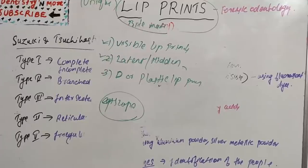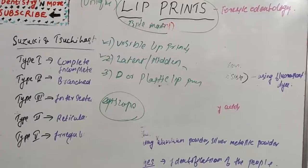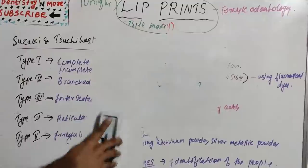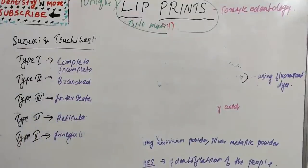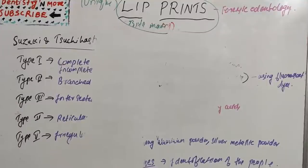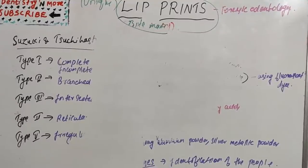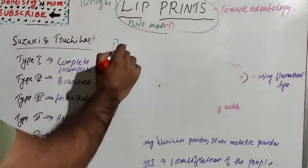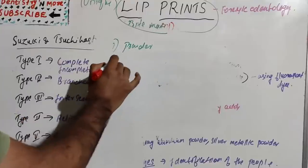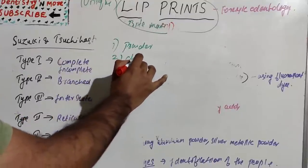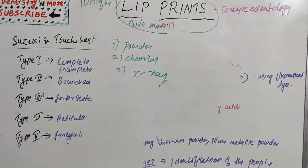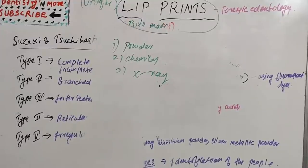Once lip prints are found, they need to be developed. There are basically three methods: the powder method, the chemical method, and the X-ray method.